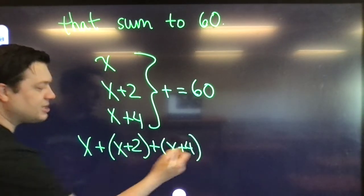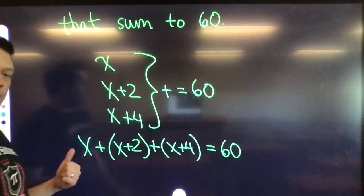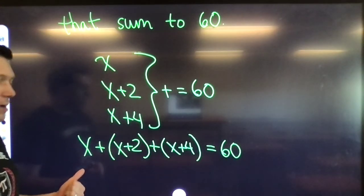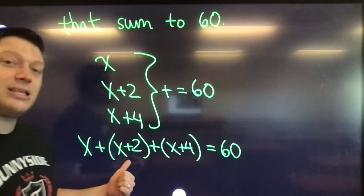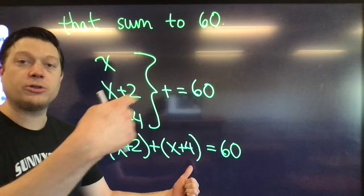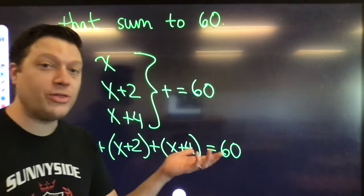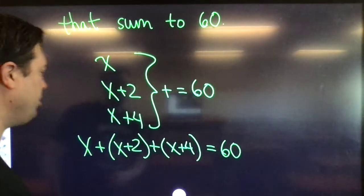Notice my use of parentheses. They're not really necessary, but they are nice to let you know. This is the first integer that we're talking about. This is the next one up. That is the next even number up. And then this one is the next even number up after that one. Again, always initializing with this first number. We don't know what that is, but when we find it, we'll know our three numbers.